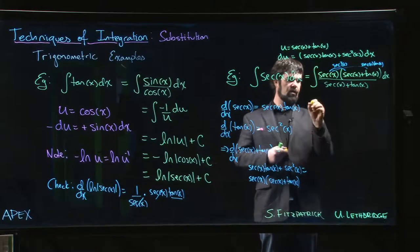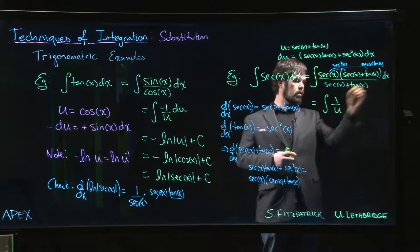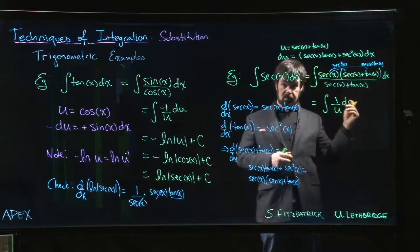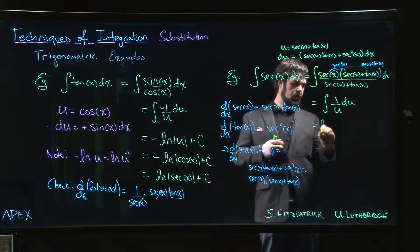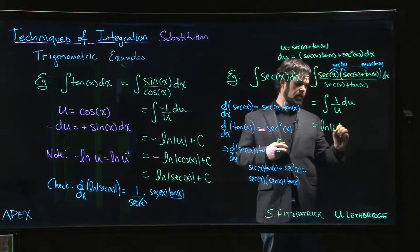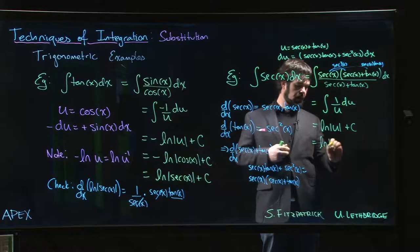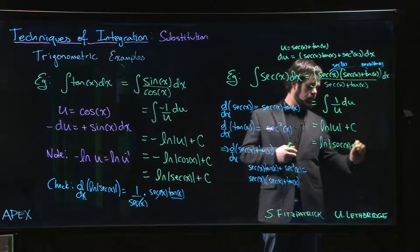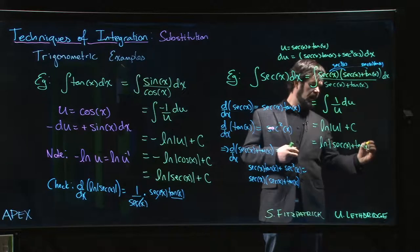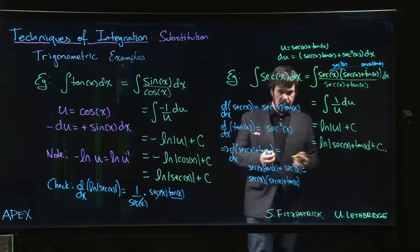This is now just 1 over u times du, just like that. We know what to do now. That's a natural log. And we substitute back in u with secant x plus tan x plus c. And you've got it.